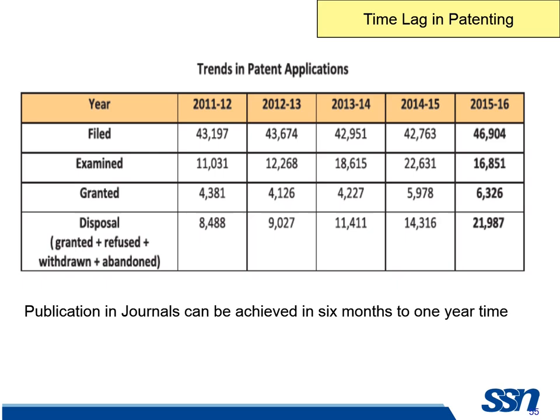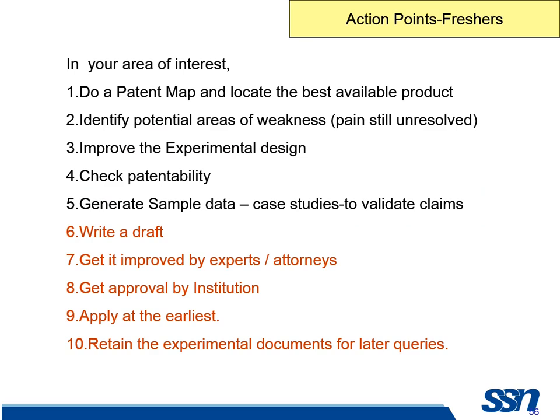With all these in mind, how do we really start? I would like to suggest two different ways. If you are a fresher, you are free to move to any new area. Suppose I decide on automobiles — I can do a patent map on automobiles and see what all people are doing. There are hundreds of patents on the bonnet, maybe only 50 on the seat, so I can decide there is something more to do on the seat. If you have not chosen your area of research and are open to new areas, do a patent mapping, locate the best available product, see where fewer patents are available, and then start working in that area.